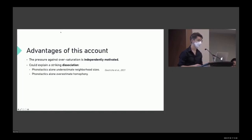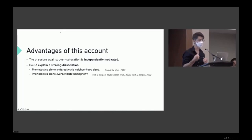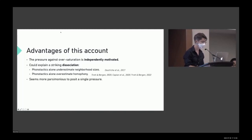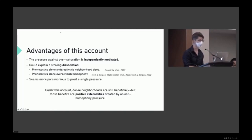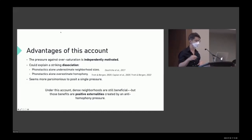This would explain the dissociation: phonotactics underestimate neighborhood sizes and also overestimate homophony. There may be a natural connection between these two things — maybe instead of two distinct pressures, a single process could explain both. It seems more parsimonious to posit a single pressure. Under this account, dense neighborhoods would still be beneficial — those advantages for learning and production don't go away — but they would be positive externalities created by an anti-homophony pressure.